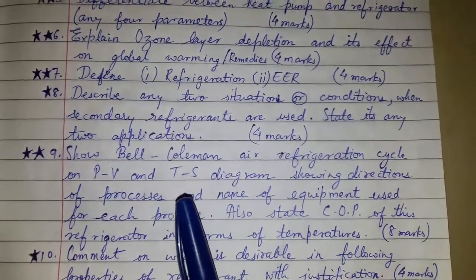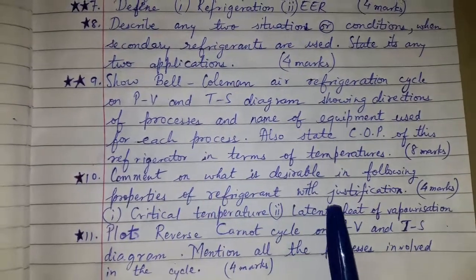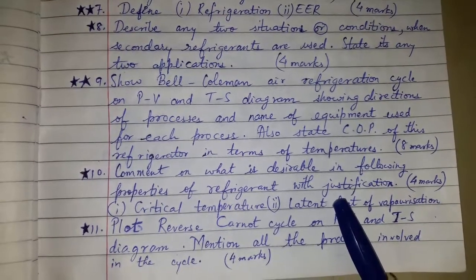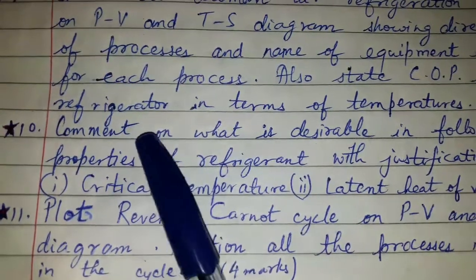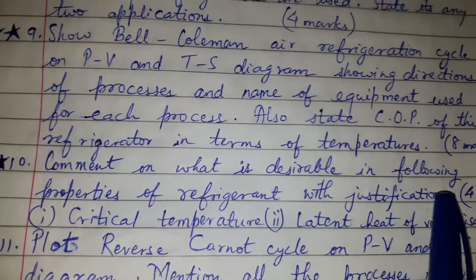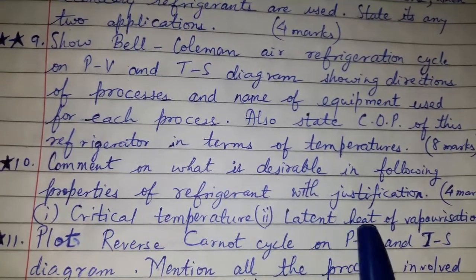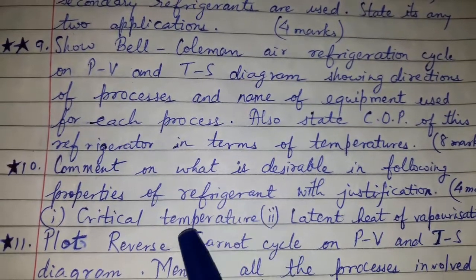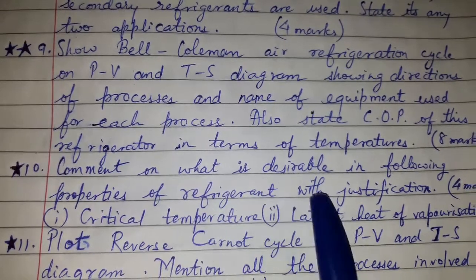A big question of eight marks can be asked for the Bell-Coleman air refrigeration cycle. Question ten: Comment on what is desirable in the following properties of a refrigerant with justification, for four marks — critical temperature and latent heat of vaporization. Basically, you need to prepare the properties of refrigerants; these two points are part of that, but a separate question was asked focusing on just these two.